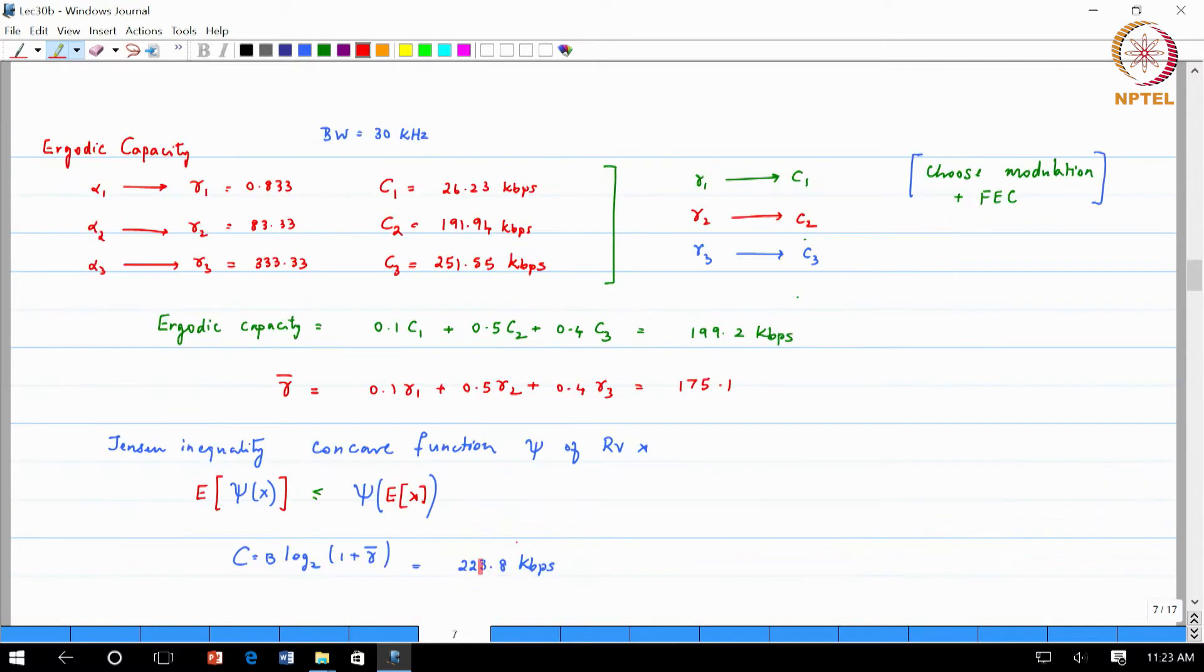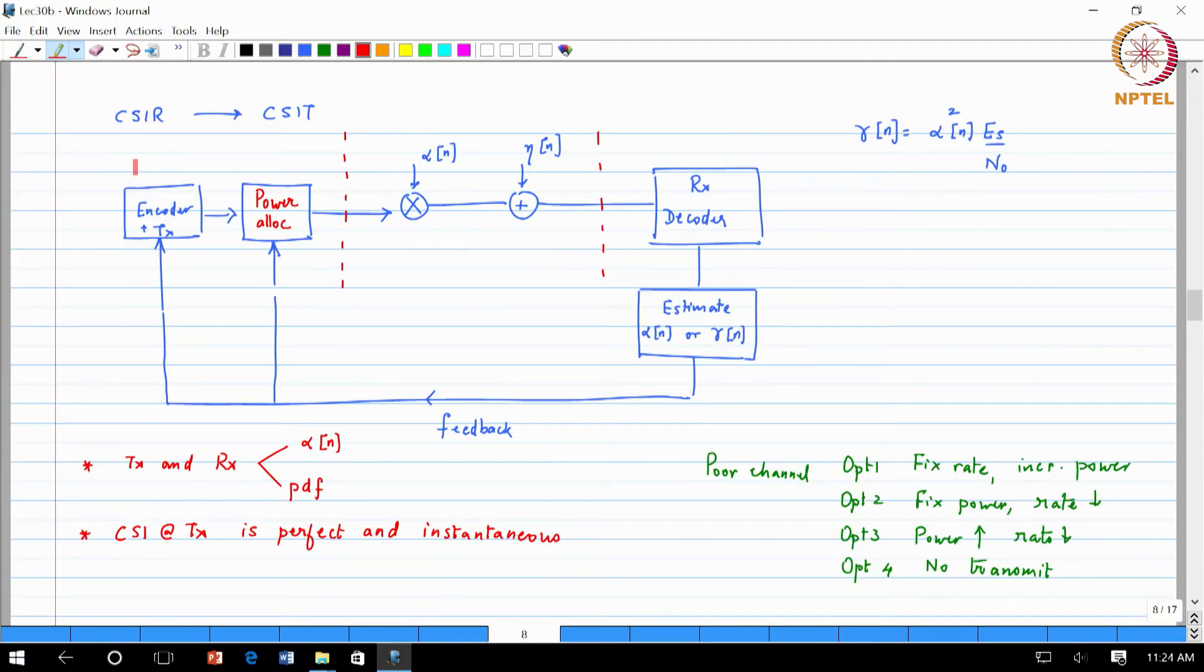For example if I knew that it was gamma 3 I would not transmit with the encoding scheme for gamma 2. I will actually choose the gamma. This is a way by which we actually want to get the best out of the system.